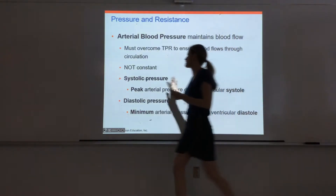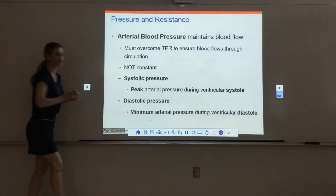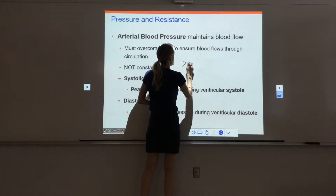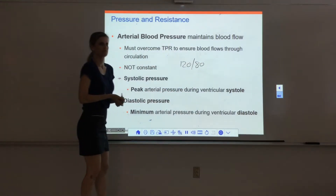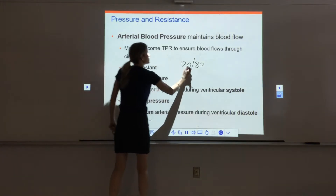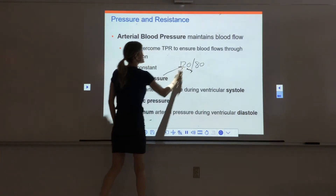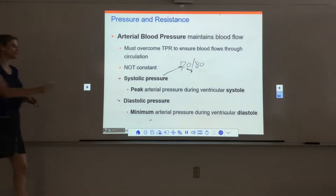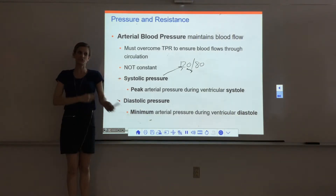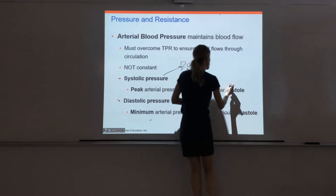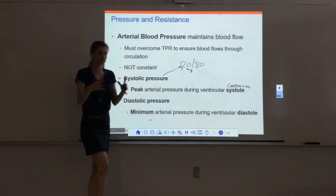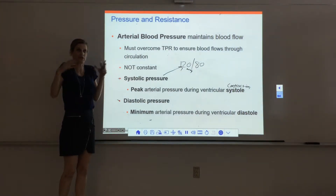When we talk about arterial blood pressure clinically, we typically use two blood pressure terms: systolic pressure and diastolic pressure. You'll hear something like 120 over 80. 120 millimeters of mercury is the systolic pressure — that's the high value, representing the pressure of the blood in your arteries during ventricular systole, which means contraction. When your ventricles contract forcefully, they cram a bunch of blood into the vessels, and that blood is really highly pressurized.